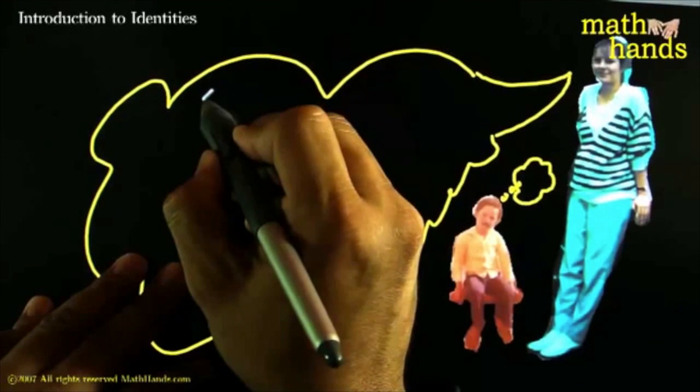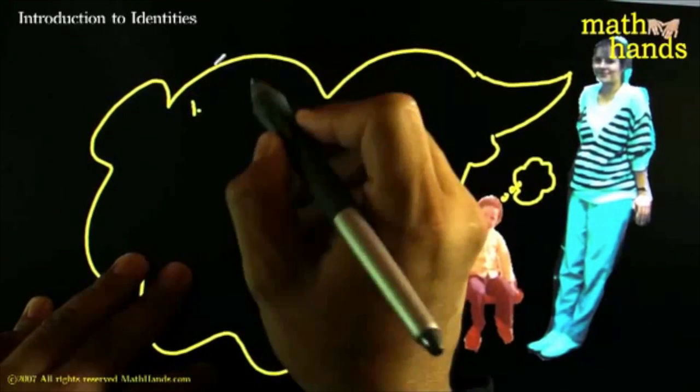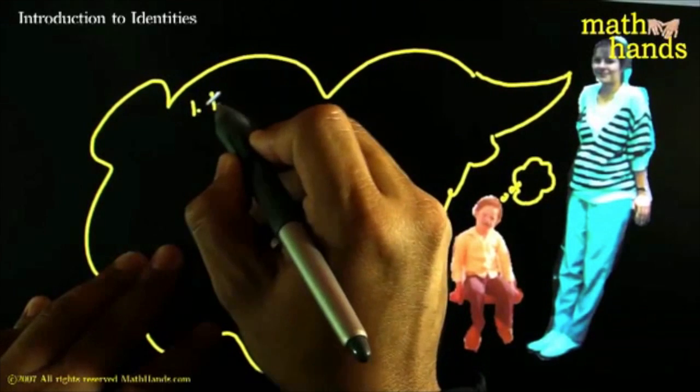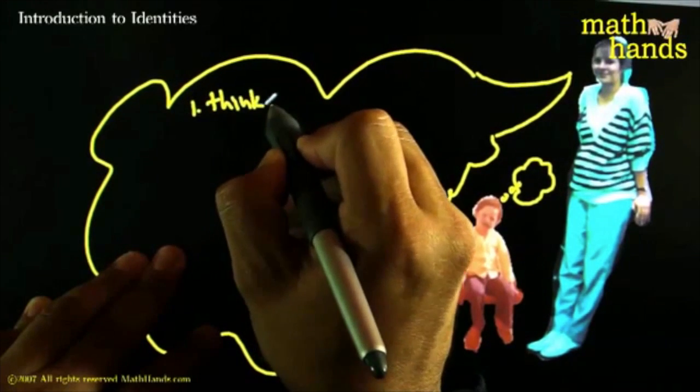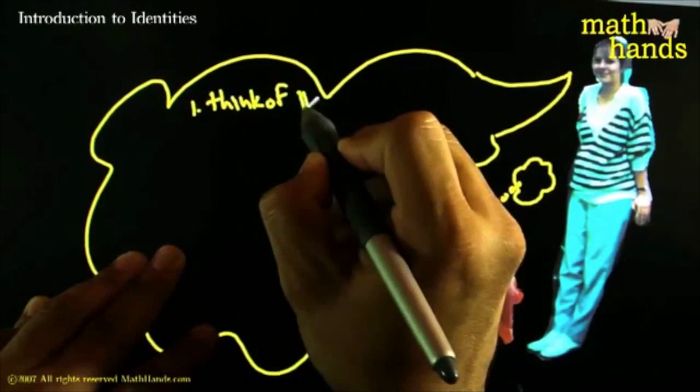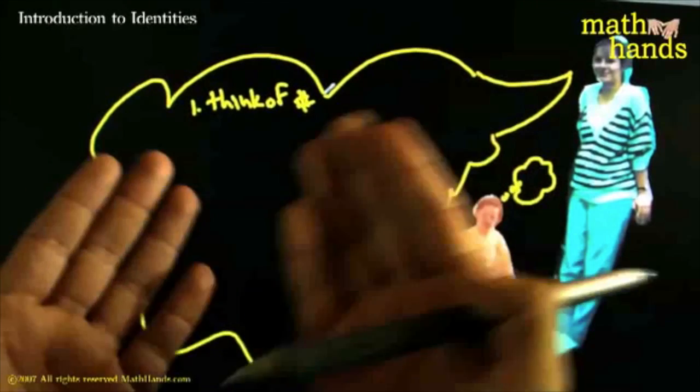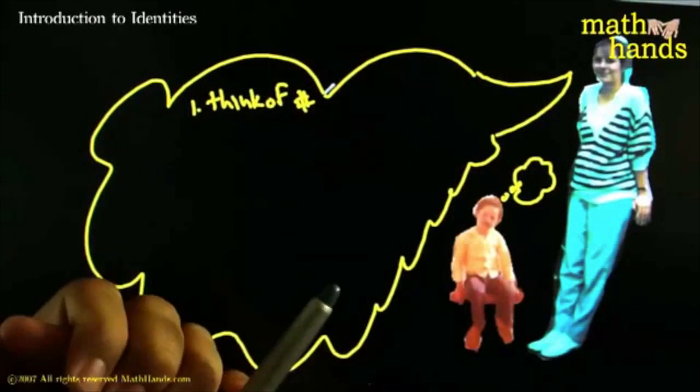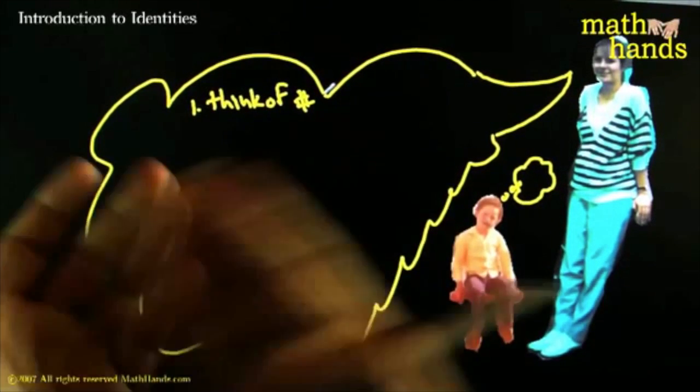And she'd say, Watch this. Think of a number. And I'm going to tell you exactly which number you're thinking about. And I'd say, Okay, try me. So she would say, Think of a number. And I'm going to write the instructions here, so you guys can play along.